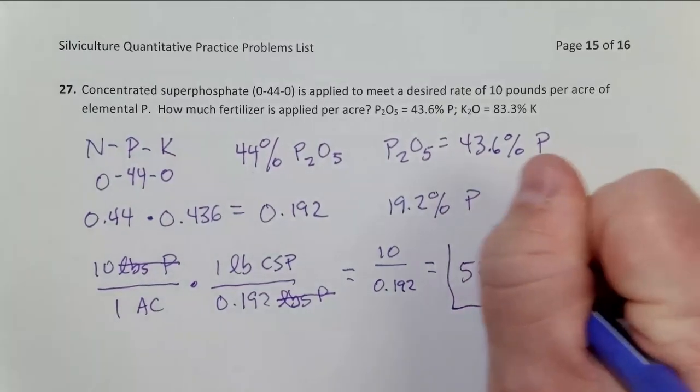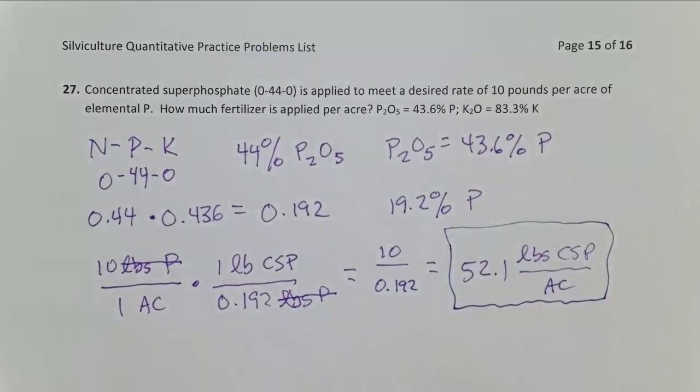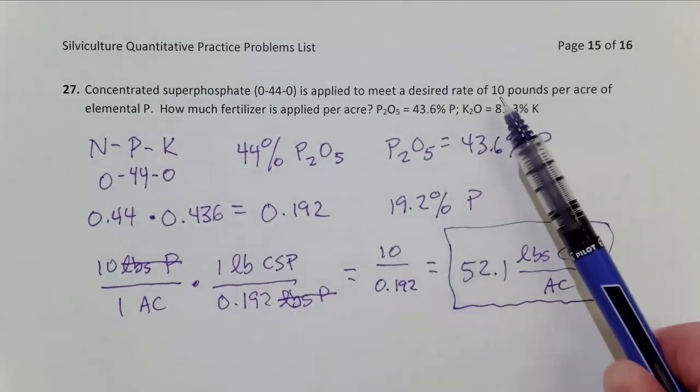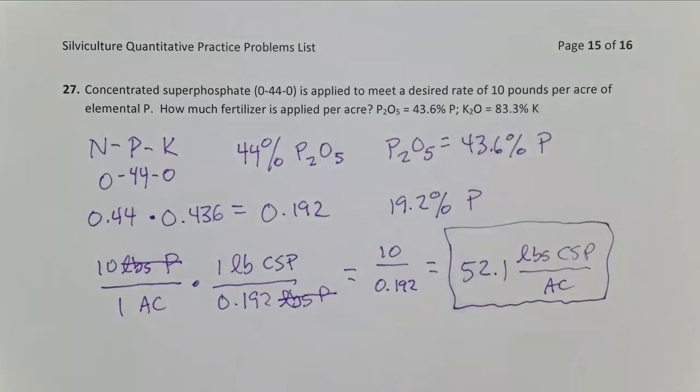Now I always do one final check on these fertilizer problems to avoid the most common mistakes. I always say, okay, there's my fertilizer about 52 pounds. Is that more than the element nutrient, 10 pounds I wanted for the element nutrient? Yes, it is more. So I probably did that problem correctly. So that's calculating the amount of fertilizer you apply given an elemental rate of fertilizer to apply.